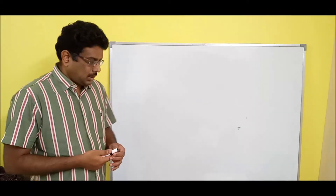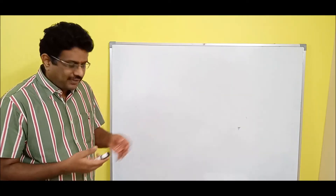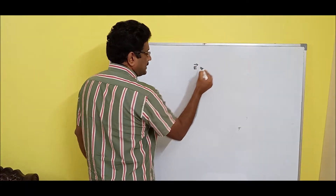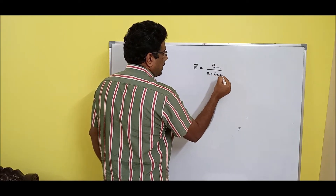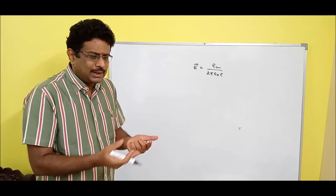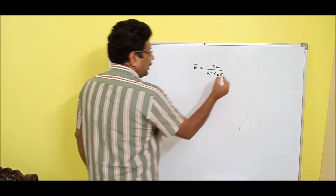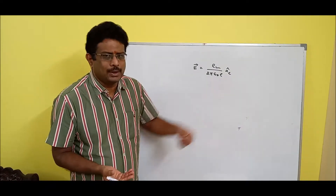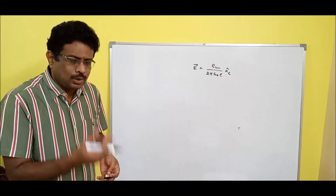Welcome back. We did a derivation for electric field intensity due to infinite line charge in the last session, and the formula was E vector equals rho_L divided by 2 pi epsilon_naught rho. Please remember it was rho — the radius in cylindrical coordinates. Instead of R, we call it rho. A_rho_cap is nothing but A_R_cap; both are the same.